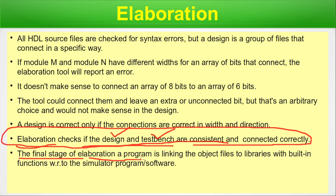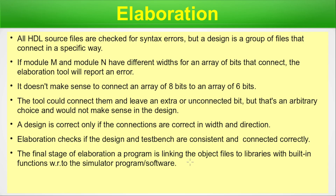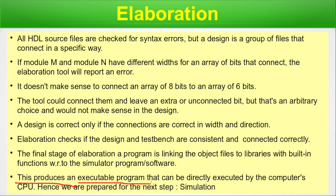The final stage of elaboration is linking the object files to libraries with built-in functions with respect to the simulator software. This is a software linking step — object files are created and used in the next step. This produces an executable program that can be directly executed by the computer CPU. When all elaboration errors are fixed, elaboration completes successfully and generates an executable that will be used for simulation.